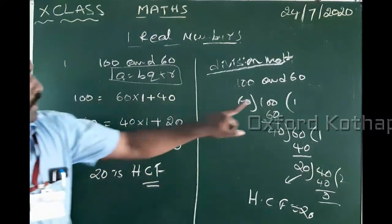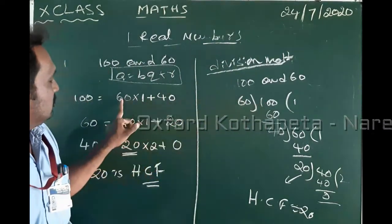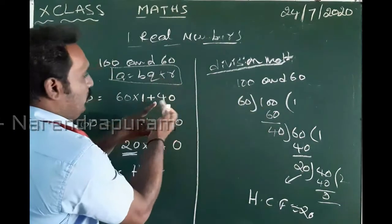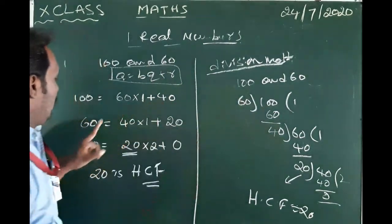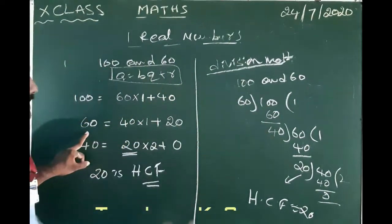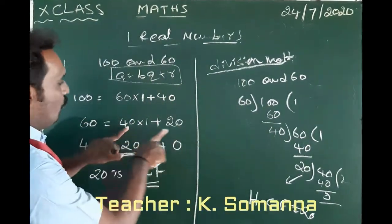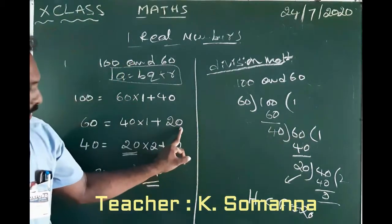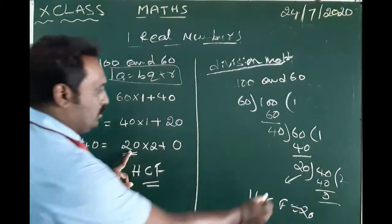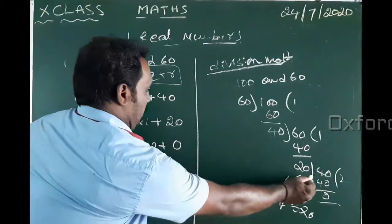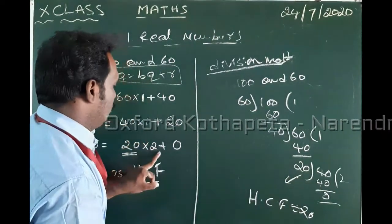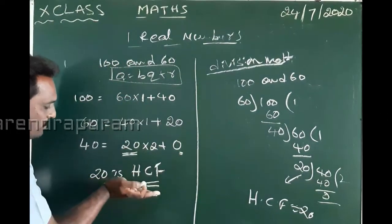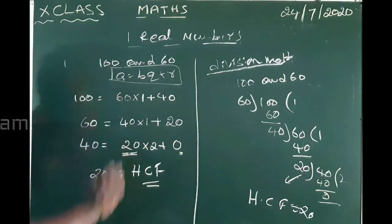Writing in A = BQ + R form: 100 = 60 × 1 + 40. Again, 60 = 40 × 1 + 20. Then 40 = 20 × 2 + 0. The remainder is 0, so HCF is equal to 20.